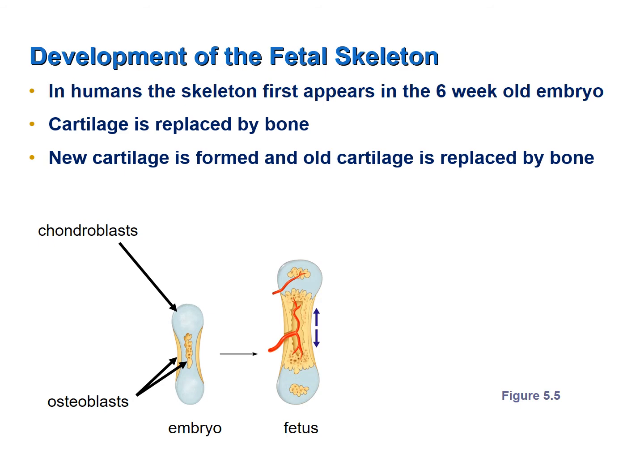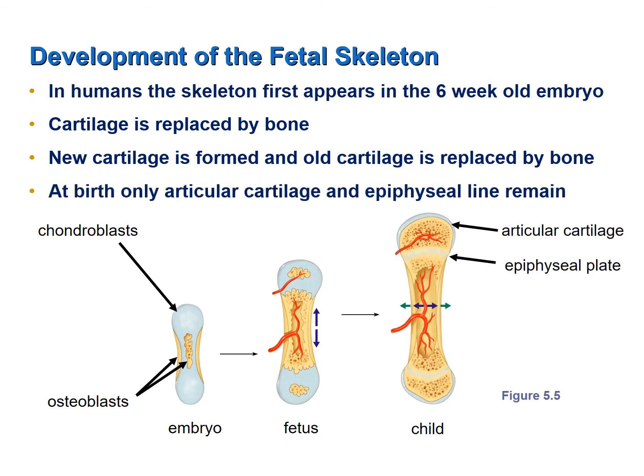In the fetus, bones get longer and a greater percentage is composed of actual osseous tissue. As new cartilage is laid down and old cartilage is replaced by bone at a greater rate, eventually by the time of birth almost all of the cartilage has been replaced by bone — except for articular cartilage surrounding the epiphysis, and a small amount of cartilage between the epiphysis and the diaphysis called the epiphyseal plate.